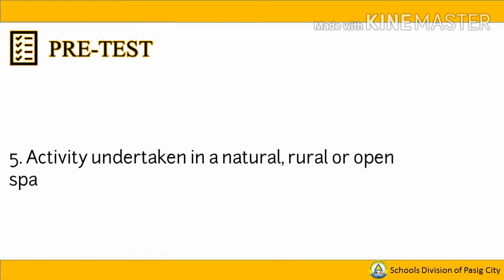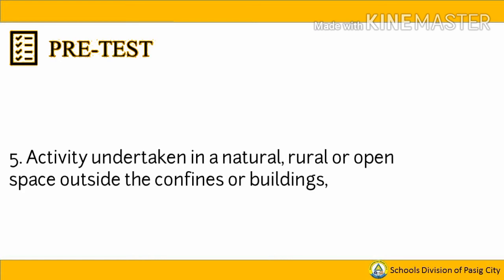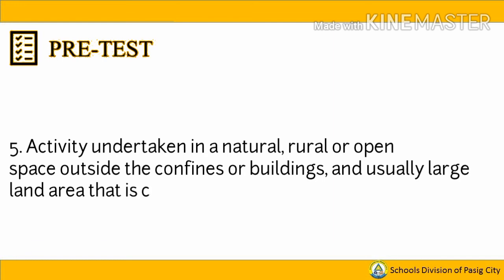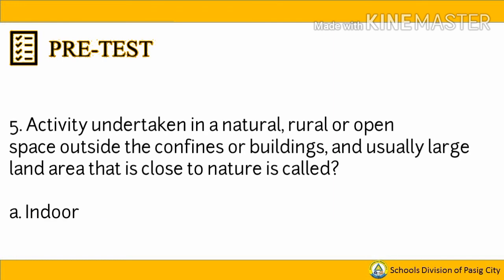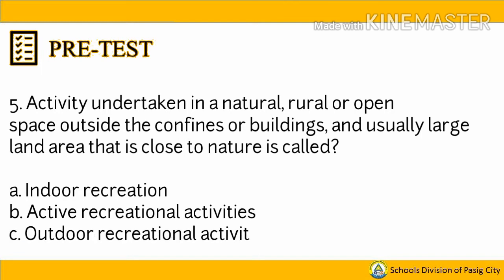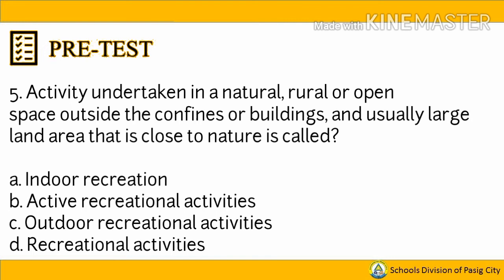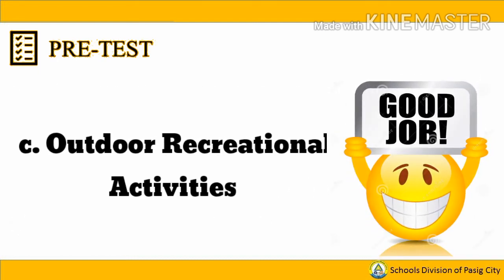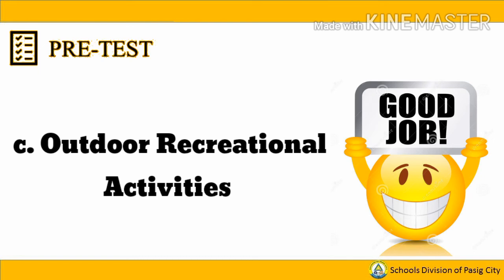Last question, number 5: Activity undertaken in a natural, rural, or open space outside the confines of buildings, and usually a large land area that is close to nature, is called A. Indoor recreation. B. Active recreational activities. C. Outdoor recreational activities. Or D. Recreational activities. Good job. The answer is letter C, Outdoor recreational activities.